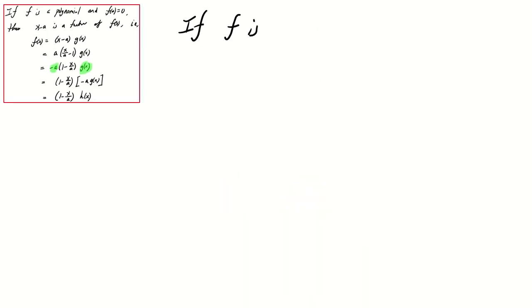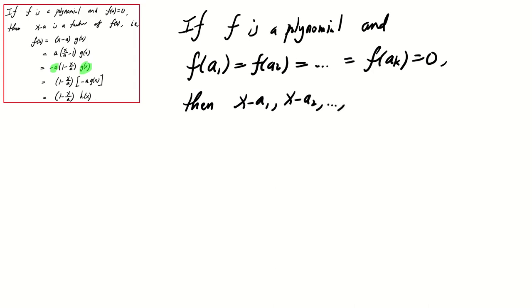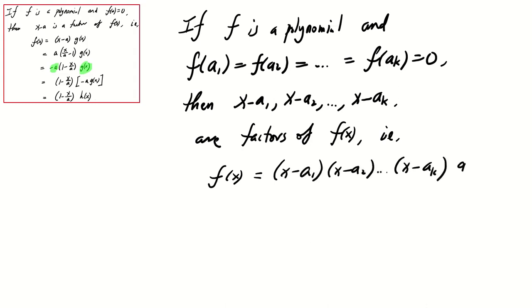If f is a polynomial and f(a1), f(a2), up to f(ak) all equal 0, then (x minus a1), (x minus a2), all the way to (x minus ak) are factors of f(x). This means that f(x) can be written as (x minus a1) times (x minus a2) all the way to (x minus ak) multiplied with another polynomial.